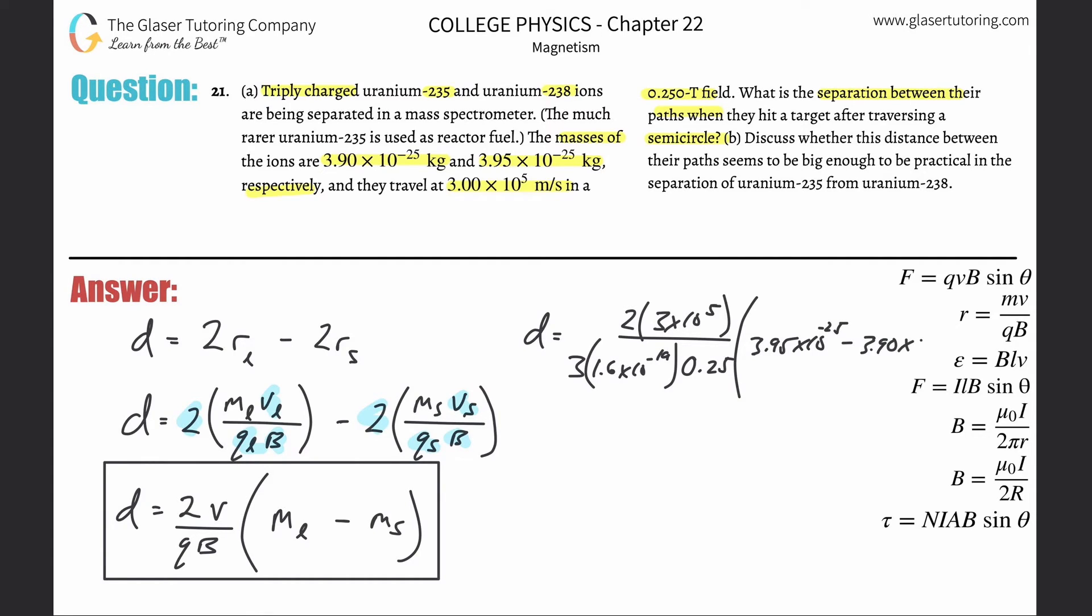The mass of the larger is this one, 3.95 times 10 to the minus 25th, minus then 3.90 times 10 to the minus 25th. Now let's plug it all in. This is going to be two times three times 10 to the fifth divided by three times 1.6 times 10 to the minus 19th times 0.25. I'm going to get my answer there, which is 5 times 10 to the 24th, and then I'm going to multiply it by 3.95 times 10 to the minus 25th minus 3.9 times 10 to the minus 25th.